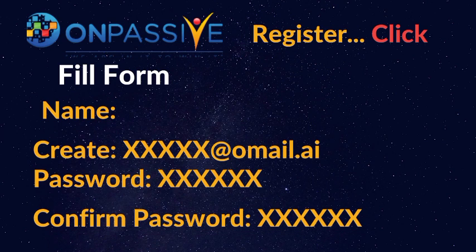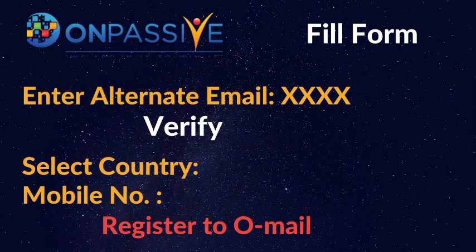Once you have done that, in that form itself there is an option to enter an alternate email — whatever you have, let's say Gmail or Rediffmail. Put that. You have to verify it. For verification, go to your Gmail or Rediffmail account — from there an OTP will come.